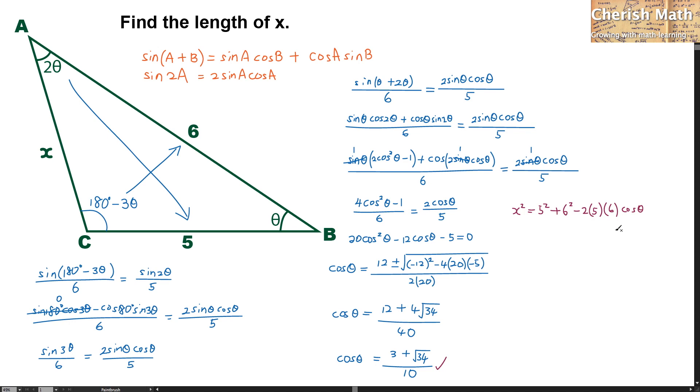If I substitute into that, it would be 3 plus square root of 34 divided by 10. Let me simplify this equation. x squared equals 43 minus 6 multiplied by square root of 34.